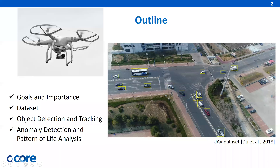Full motion video is a combination of video and associated metadata, which includes spatial position of the platform, for example a drone, and other data to enable calculation of geographic position information for video frames. The capability to perform automated target detection, classification, tracking, and anomaly detection on a full motion video could help in analyzing large volumes of data.